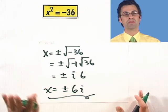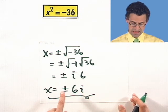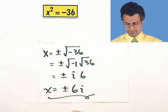Again, there are two answers, but they're both complex. There's 6i and there's minus 6i. Neat.